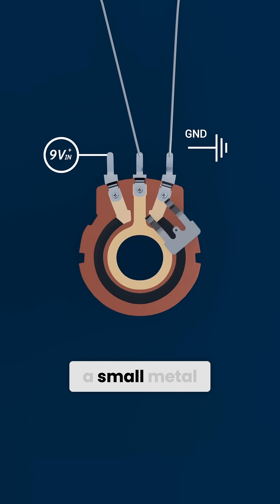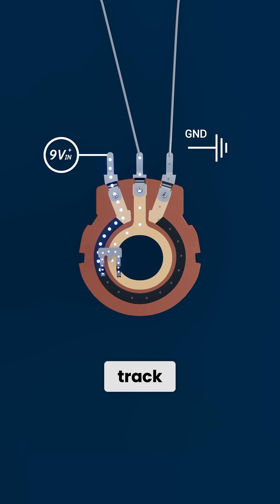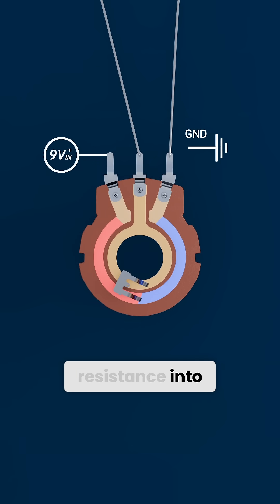Now we have the wiper, a small metal arm that slides along that track. Wherever the wiper sits, it divides the total resistance into two sections.